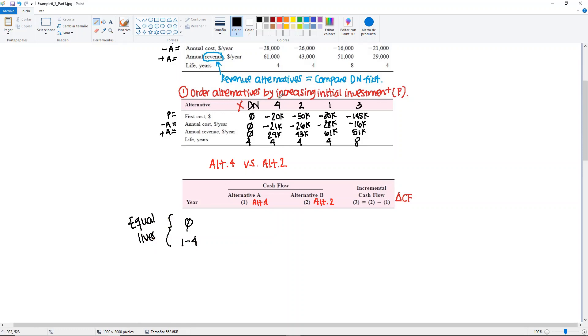We copy the cash flows. For alternative 4 we have minus $20,000, then these are both A's, so we must put them together: minus $21,000 plus $29,000, giving us $8,000. For alternative 2 we have minus $50,000, and then our two A's which is minus $26,000 plus $43,000, giving us $17,000.